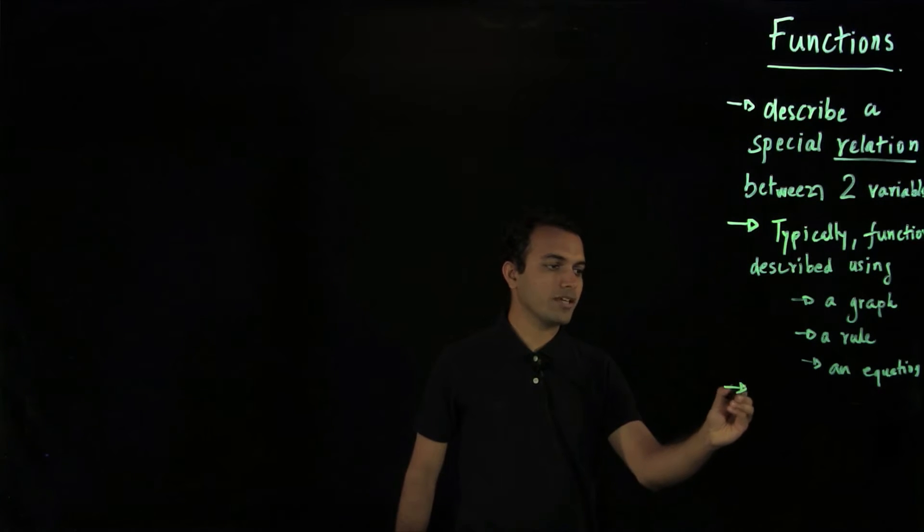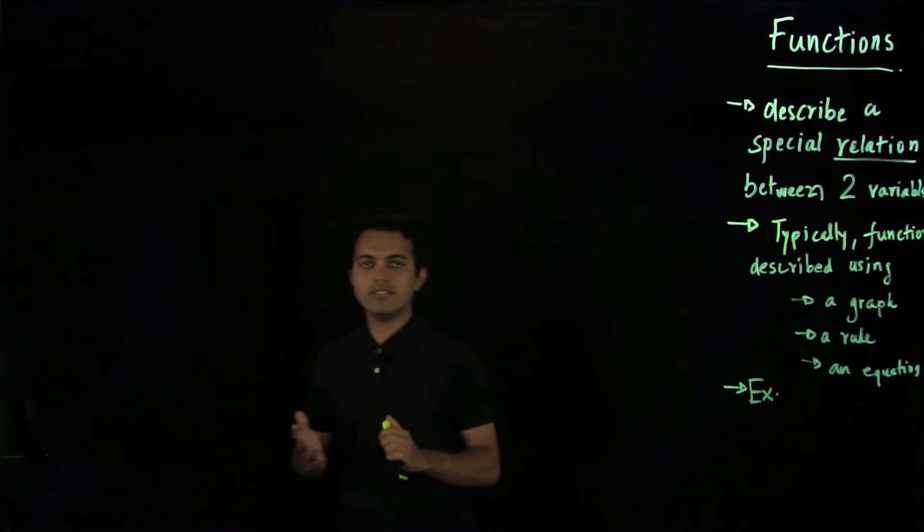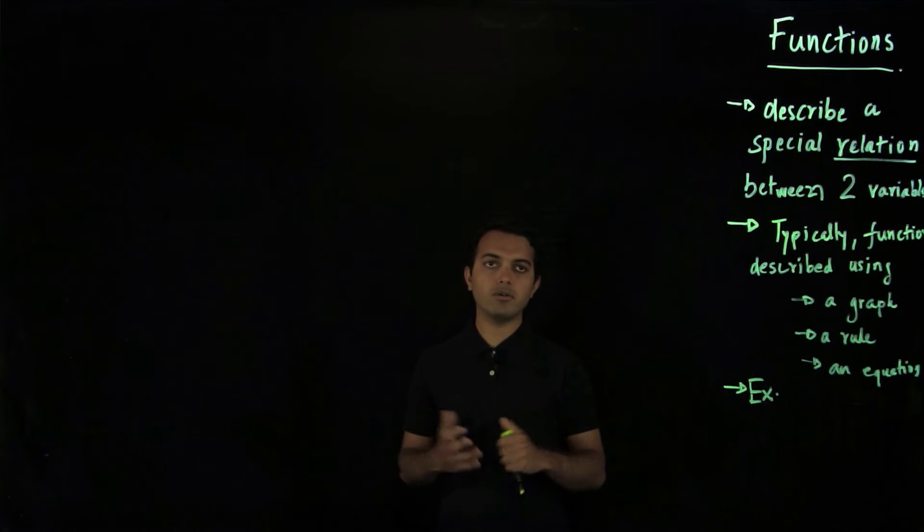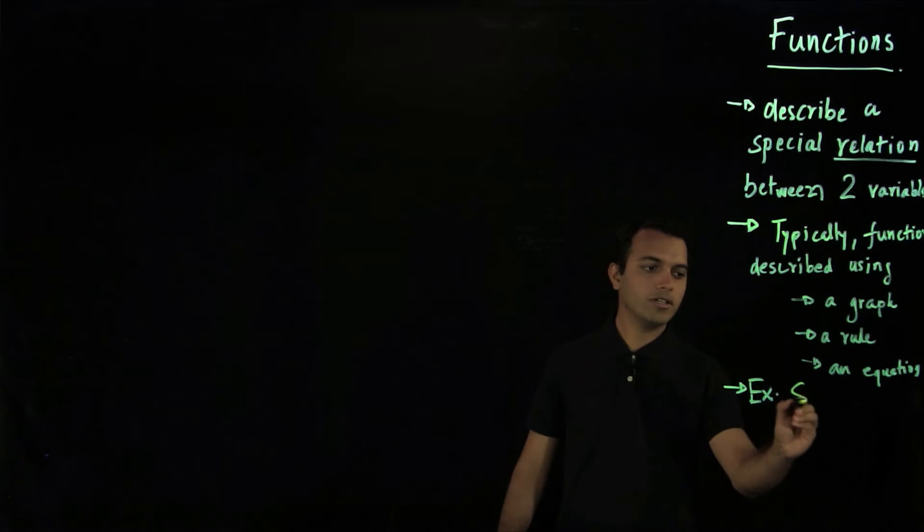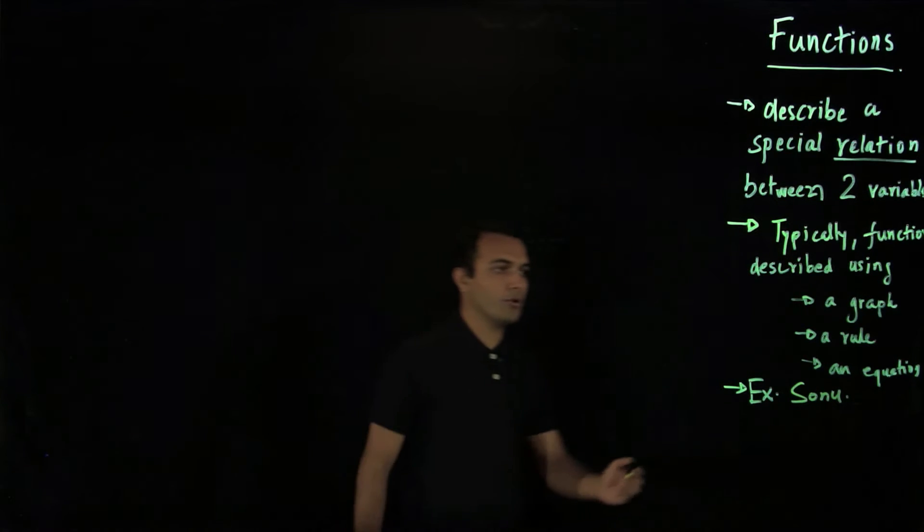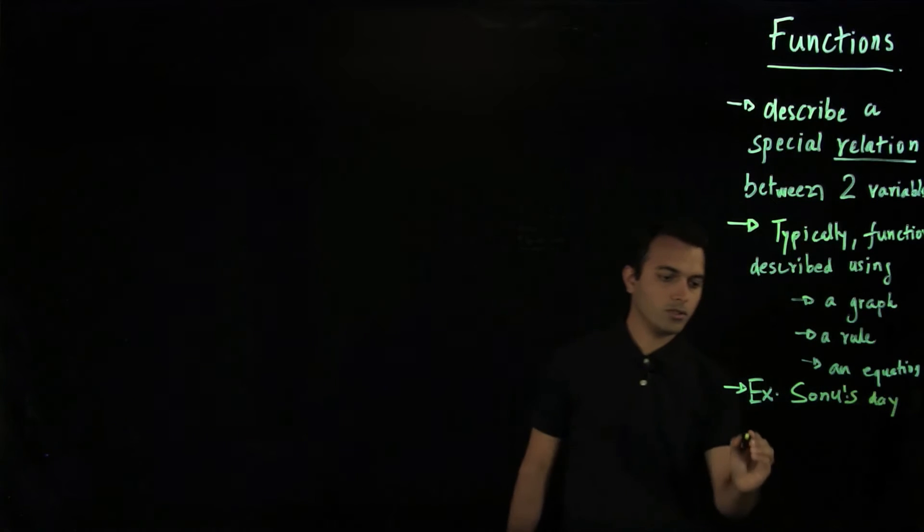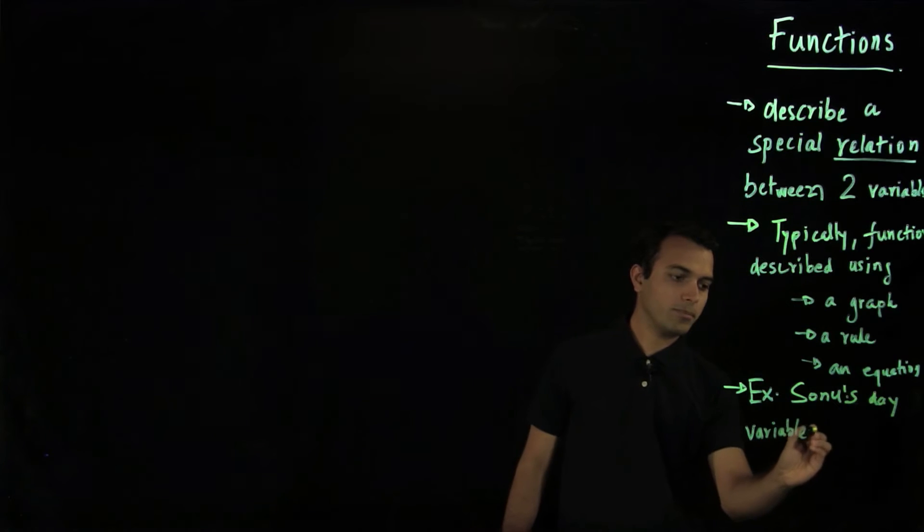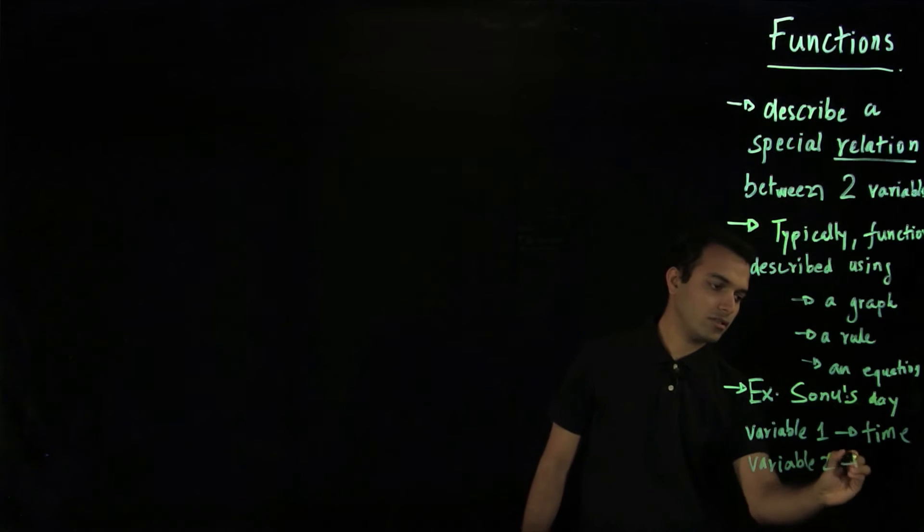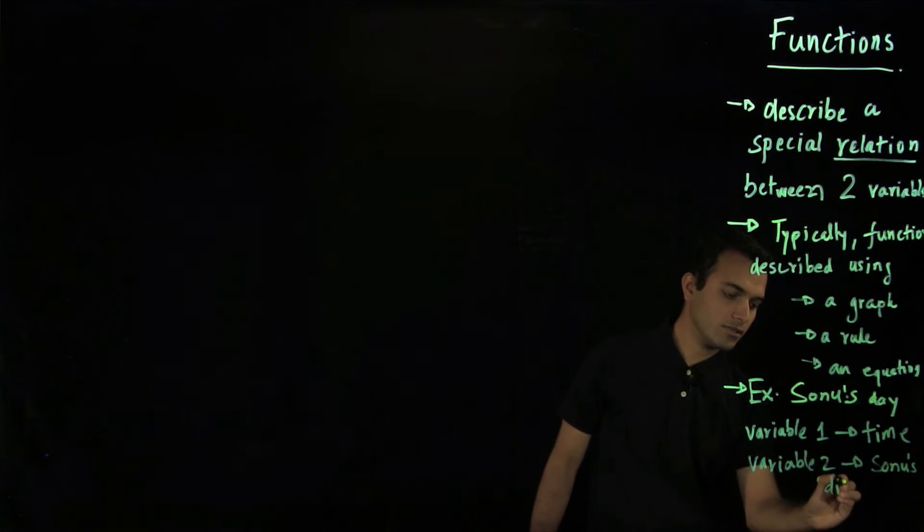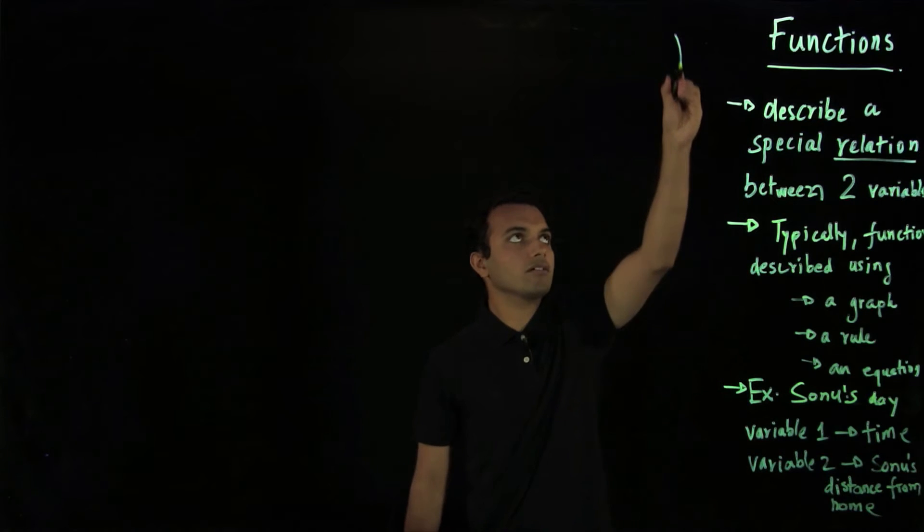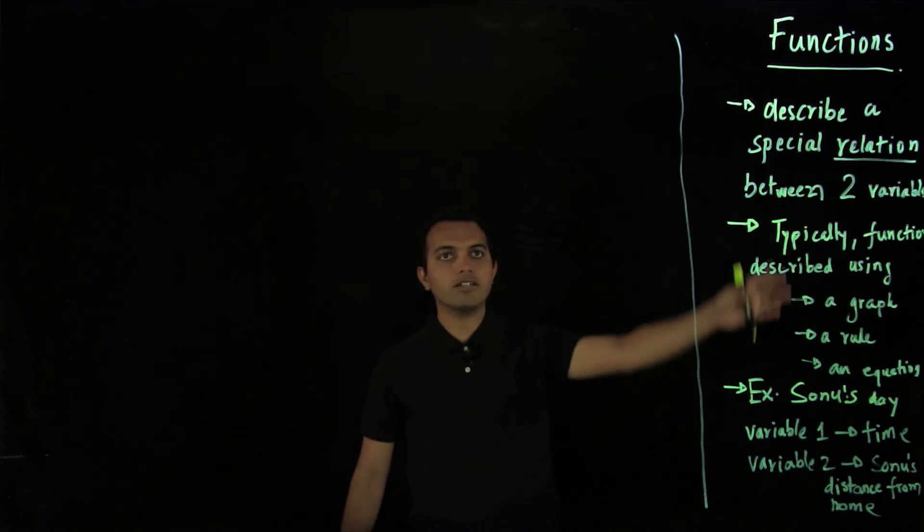Let's begin with a very simple example. We'll take a life of a typical student who's studying for an exam and going to school. And we want to figure out how his or her day goes. So let's call the student Sonu. And we want to find out how Sonu's day went. And the variable that we are interested in is how far Sonu is from home. So variable one that we'll select is time.